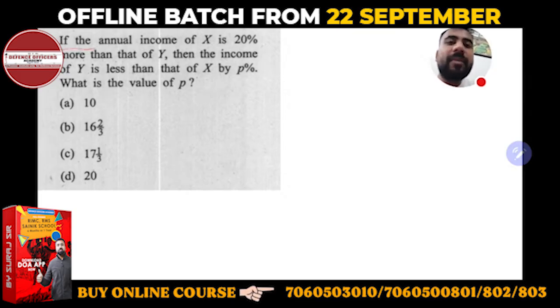What is given to you? If the annual income of X is 20% more than that of Y, then income of Y is less than that of X by P percent. What is the value of P? It is very simple. You have to understand in this way: the annual income of X is 20% more than Y.